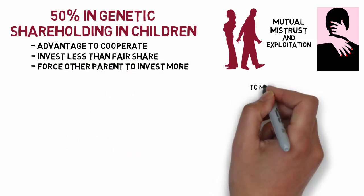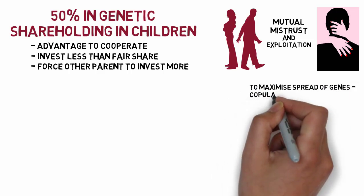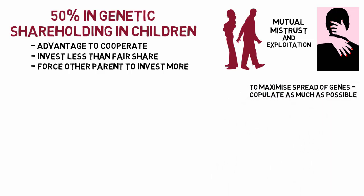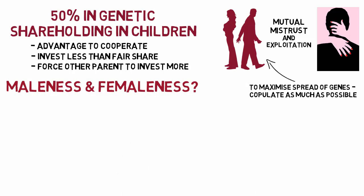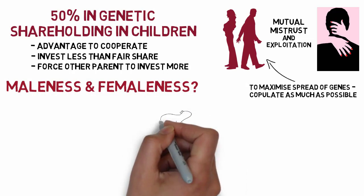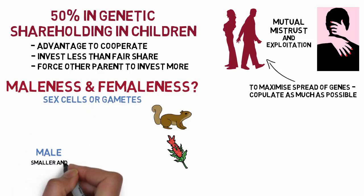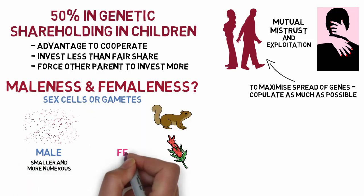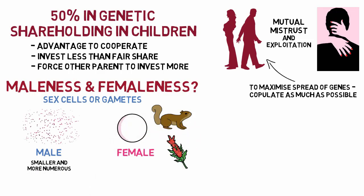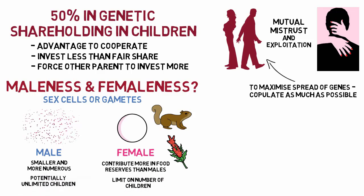The optimal strategy to maximize the spread of your genes will be to copulate with as many members of the opposite sex as possible, usually done by males. Dawkins points out that maleness and femaleness are arbitrary labels, and the only reliable indicator in all animals and plants is that the sex cells or gametes of males are much smaller and more numerous than the gametes of females. This means females contribute far more in food reserves than males, placing a limit on the number of children females can have, while males can have virtually unlimited children.